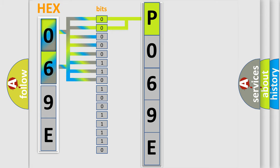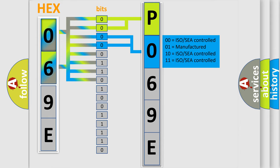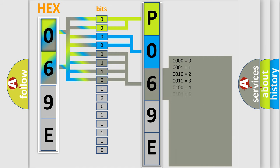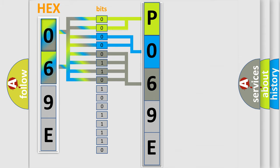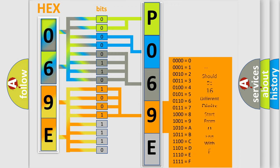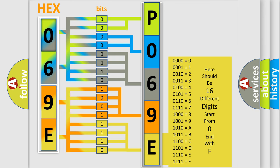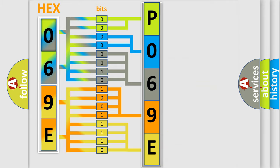The next two bits determine the second character. The last four bits of the first byte define the third character of the code. The second byte is composed of a combination of eight bits. The first four bits determine the fourth character of the code, and the combination of the last four bits defines the fifth character. A single byte conceals 256 possible combinations.